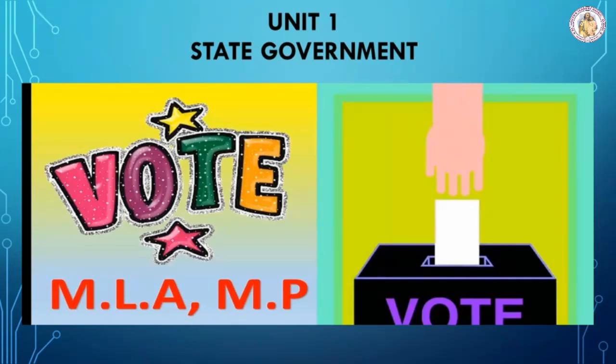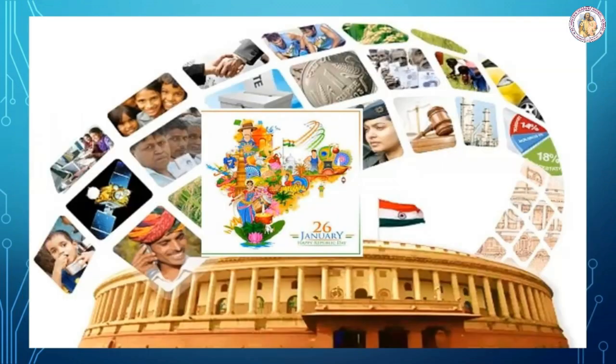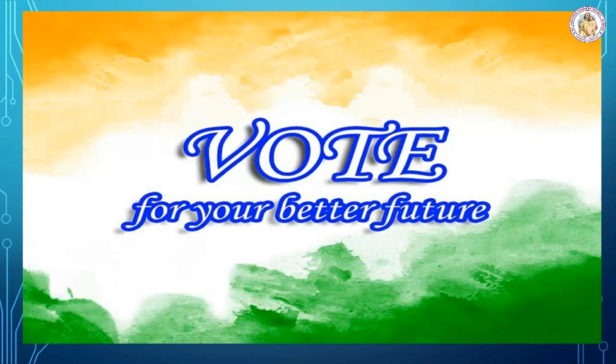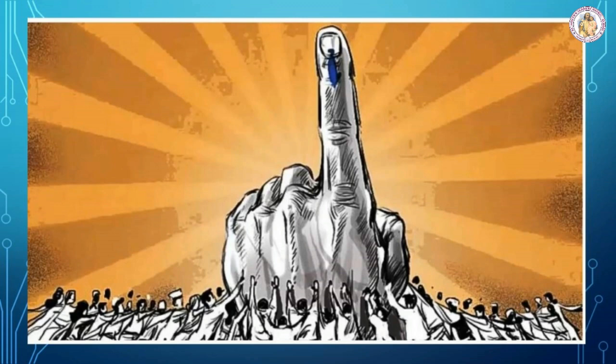Today we are going to see civics unit 1: state government. India is a country which is deeply rooted with its culture. It is the biggest democratic country in the world. In a democracy, the leaders are elected by voting. The government in a democracy functions as for the people, of the people, and by the people.